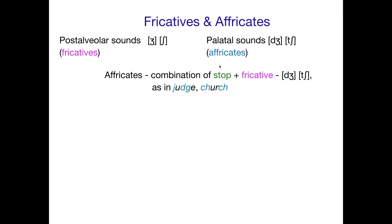And then if you go a little further back in the palate, you get what are called affricates, which are these really cool combinations of a stop sound — in particular, 'duh' and 'tuh' — plus these fricatives 'juh' and 'shuh'. So the 'juh' sound in English is actually a very quick pronunciation of 'duh' followed by 'juh'. And the 'chuh' sound, like in 'church', is a very quick pronunciation of 'tuh' followed by 'shuh'.